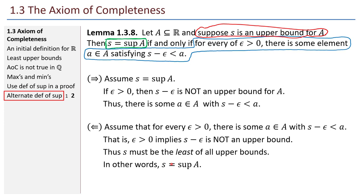And that completes our section 1.3, the axiom of completeness — our defining axiom for what makes the real numbers the real numbers — and this important idea of the supremum.